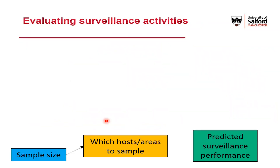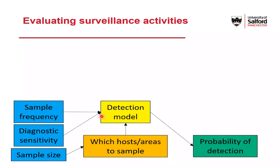Before we go rushing out to sample, we need to think about how well this surveillance is going to perform. To do this we need to think carefully about what our surveillance aim is. Since we're interested in early detection surveillance, let's say the surveillance performance metric we're interested in is the probability of detecting infection before we hit a prevalence of one percent. To evaluate how well surveillance will work we need to create a detection model. This is where we plug in other relevant parameters: the diagnostic sensitivity — the probability that you correctly identify an infected host — the sample frequency, since this is a recurrent surveillance activity, and the sample size.